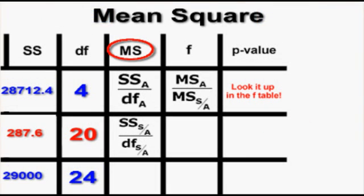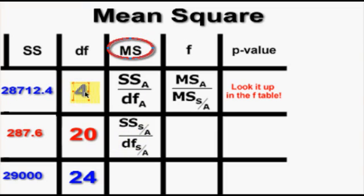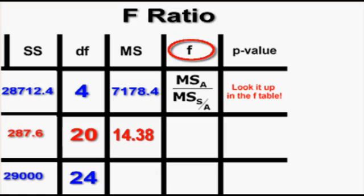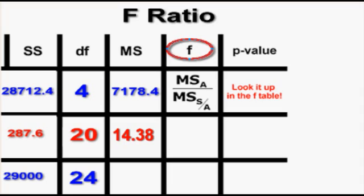Next on the source table is mean squares — very simple. Take your sum of squares already calculated and divide by the degrees of freedom for each row. We calculate between group mean squares and within group mean squares; we don't need to calculate the total. To find the F ratio, divide the mean squares of the between group by the mean squares of the within group. In notation, A stands for between group and S/A stands for within group. The mean squares within is your error term, because variance within groups makes it hard to show a significant difference between groups.